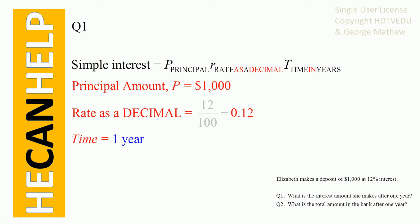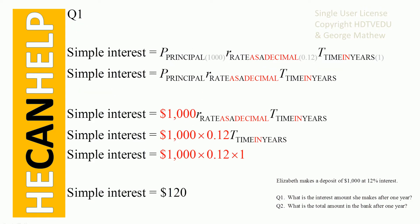So Elizabeth makes a deposit of $1,000 at 12% interest. The principal is $1,000, the rate is 12% — converting to a decimal gives 0.12 — and the time is one year. We have the principal, the rate as a decimal, and time. Substituting all those numbers: principal is 1,000, rate is 0.12, time is 1. So 1,000 times 0.12 times 1, and we get $120.